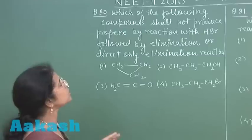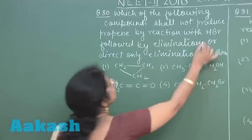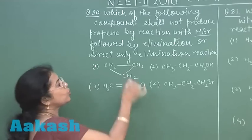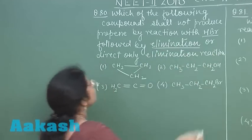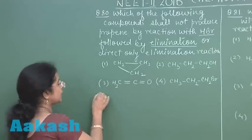Which of the following compounds shall not produce propene by reaction with HBr followed by elimination or direct only elimination reaction? Four options are given.